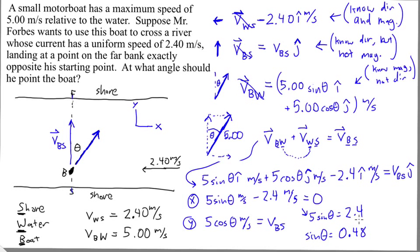So what that means then is that theta equals 28.7 degrees, and that is, in fact, the angle that Mr. Forbes has to point the boat, so he points it to 28.7 degrees.